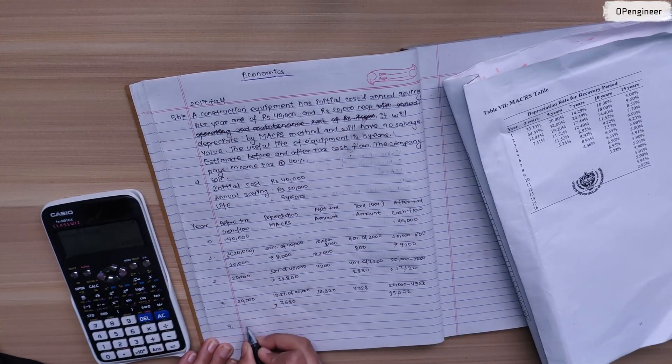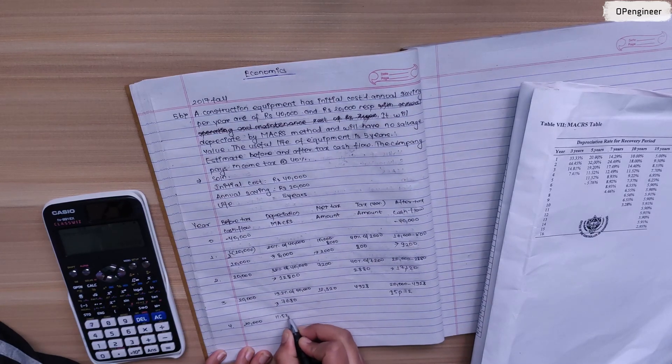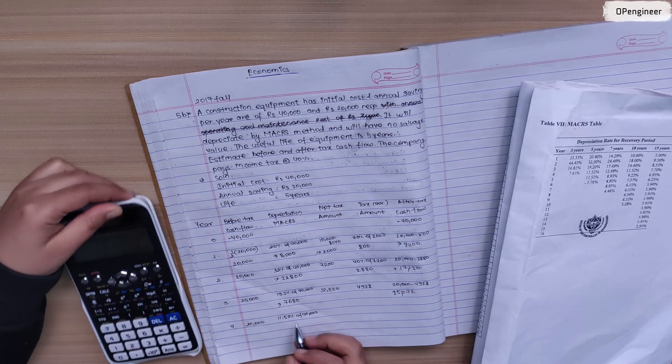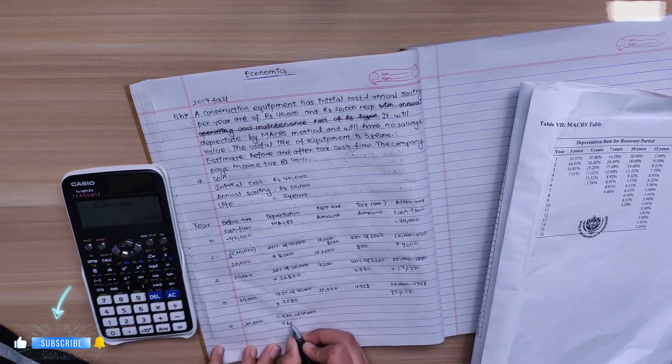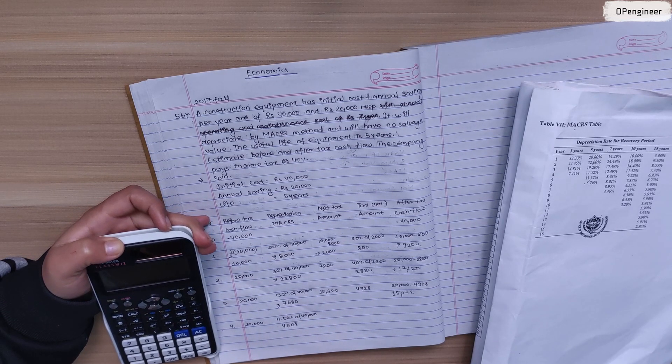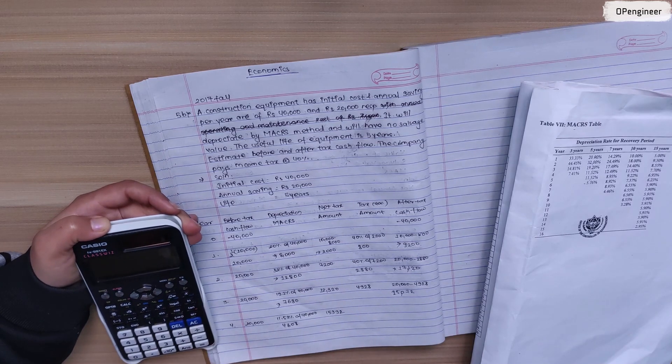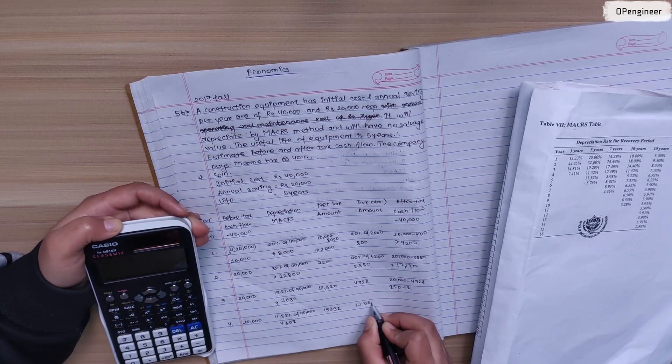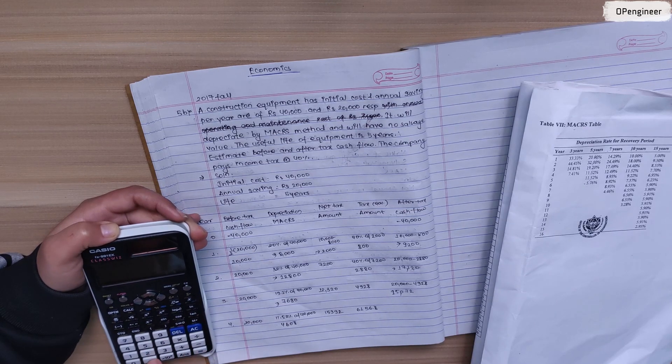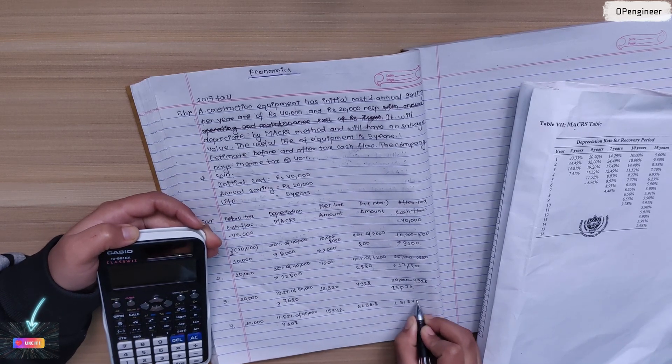Fourth year, depreciation is 11.52% of 40,000, which is 4,608. Net taxable amount is 20,000 minus 4,608 equals 15,392. Tax is 40% of 15,392, which is 6,156.8. After tax cash flow is 20,000 minus 6,156.8 equals 13,843.2.